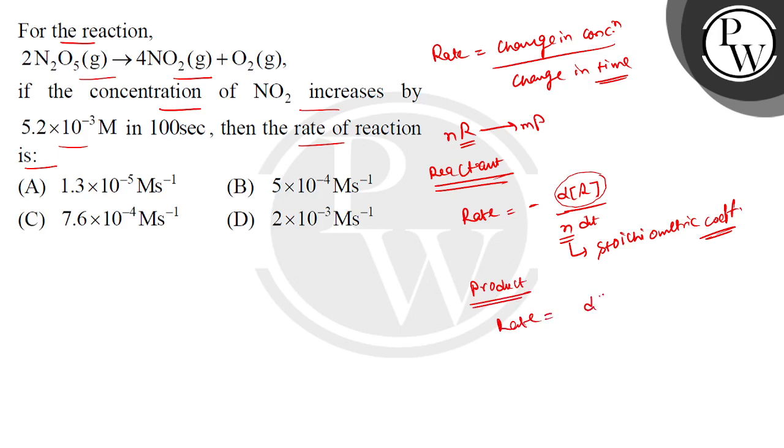Rate is equal to d product over dt, which means multiply by 1 over m, which is the stoichiometric coefficient. The rate is equal to 1 over 2 d N2O5 over dt. In the same way, the rate is equal to 1 over 4, and it is equal to the product concentration. So the rate is equal to 1 over 4 d NO2 over dt.